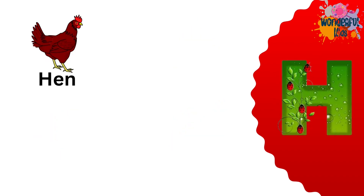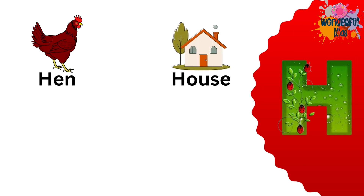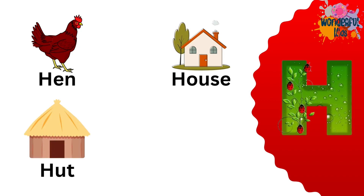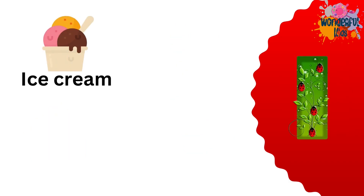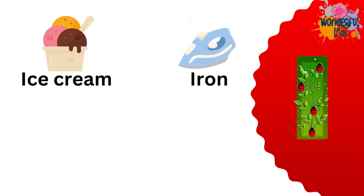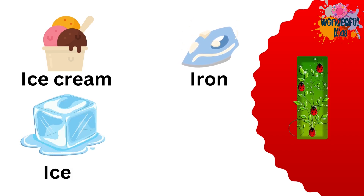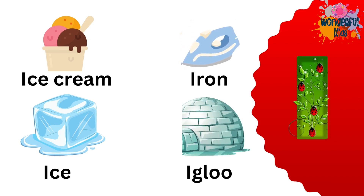H for hen. H for house. H for horse. I for ice cream. I for iron. I for ice. I for igloo.